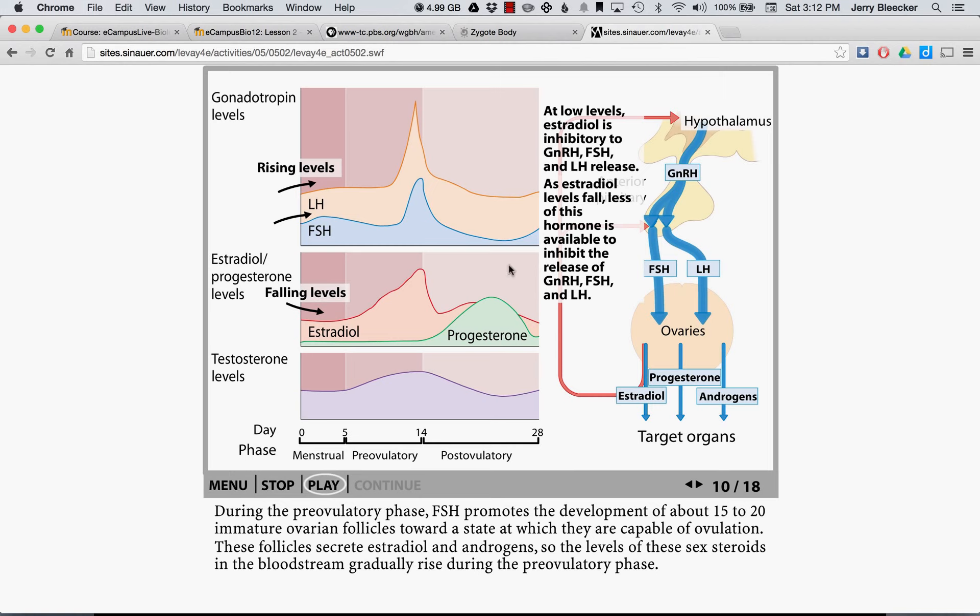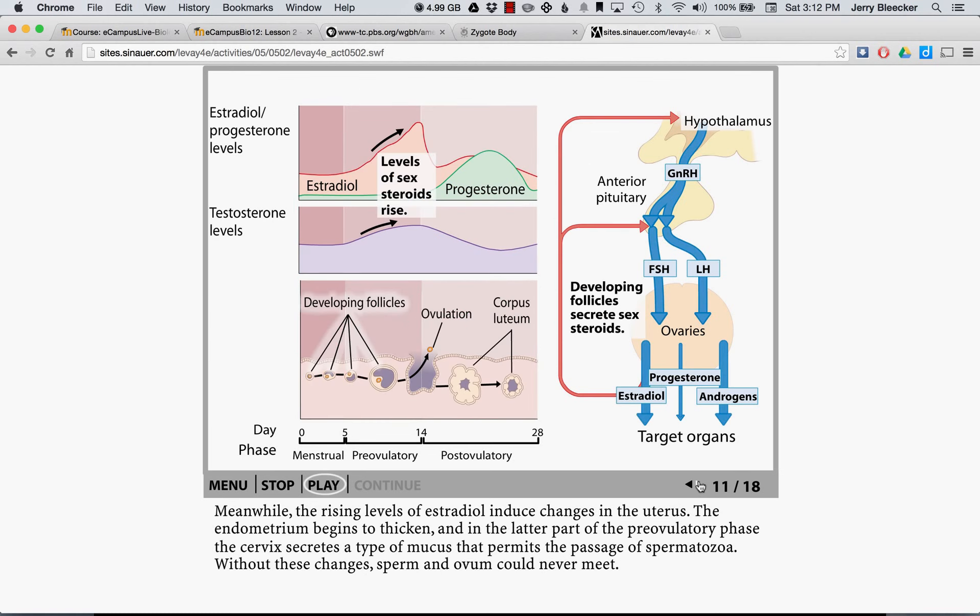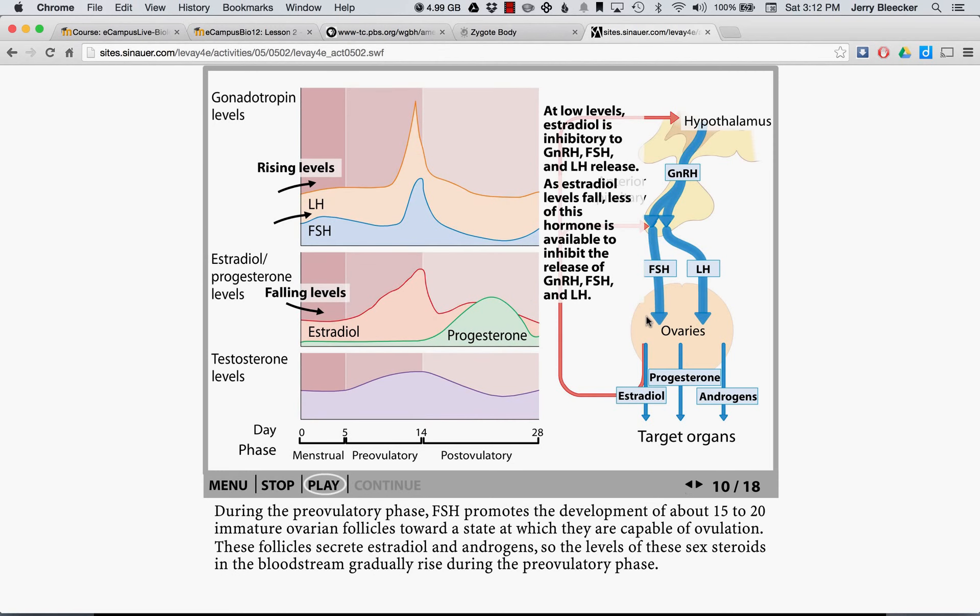Now, that ends. As progesterone begins to rise, progesterone has the opposite effect. Progesterone will tell the hypothalamus to stop making gonadotropic-releasing hormone, and as a result, it will decrease the follicle-stimulating luteinizing hormone.